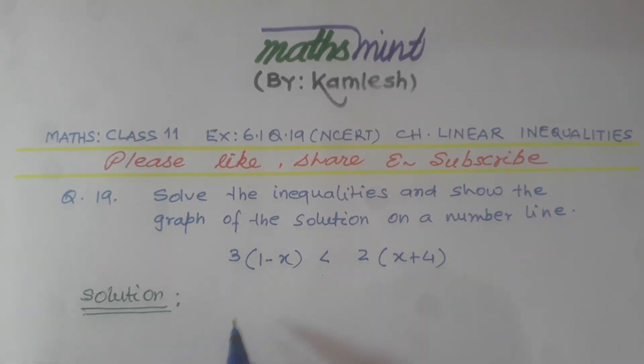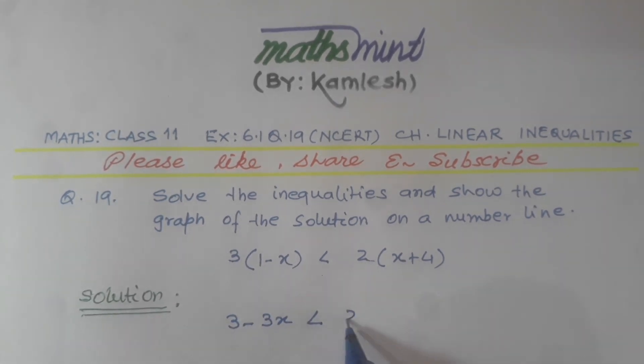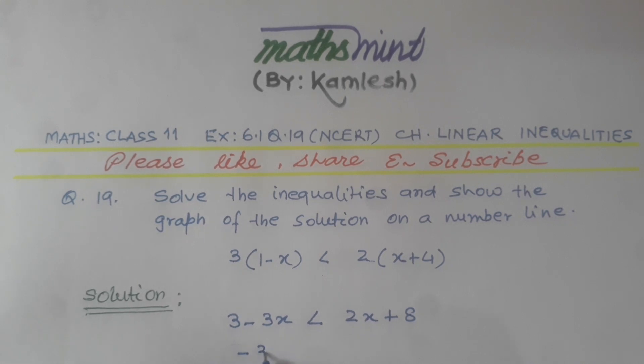The solution: 3 times 1 is 3, minus 3 times x equals 3 minus 3x, which is smaller than 2 times x plus 2 times 4, which equals 2x plus 8. So we keep minus 3x here and transpose 2x to this side, so it becomes minus 2x.